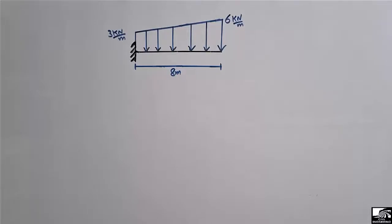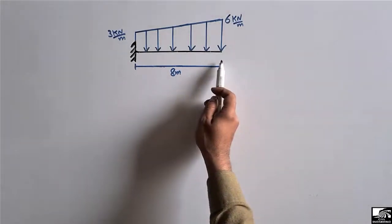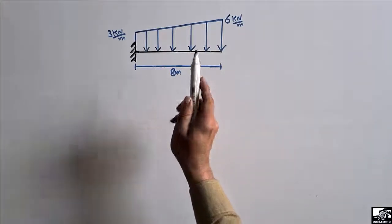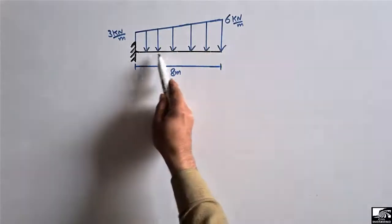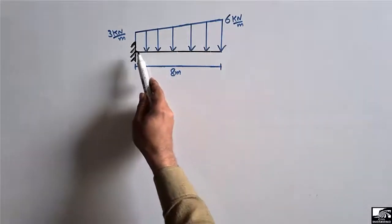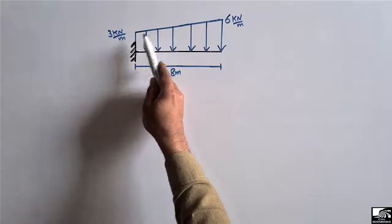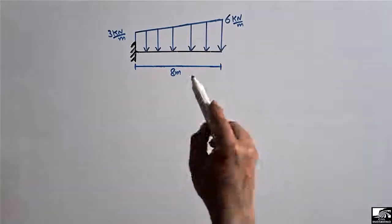Hello guys, welcome back to Receiver Engineering YouTube channel. Please subscribe our channel for the Receiver Engineering videos. Today's lecture we are going to find out the support reaction for this cantilever beam. This is a cantilever beam of total length of 8 meters, and there is a trapezoidal load acting on it. The magnitude of the load starts from 3 kilonewton per meter and ends at 6 kilonewton per meter.